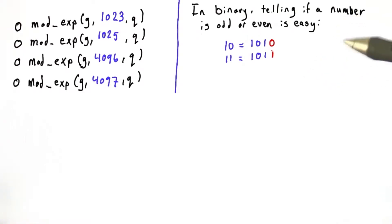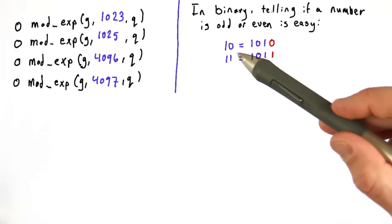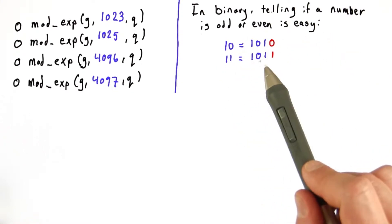First, I want to observe that when a number is represented in binary, it's easy to tell if it's odd or even. All you have to do is look at the last digit. For example, 10 is 1010, and 11 is 1011.